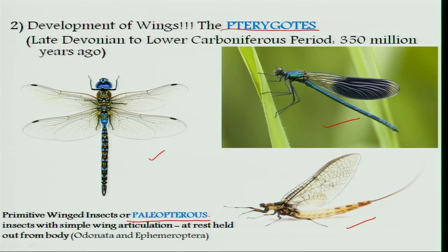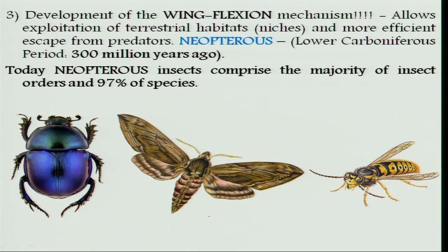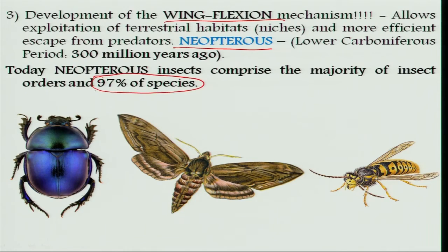The second great radiation of insects took place with a very small modification: a wing-flexing mechanism — that means they developed the ability to fold their wings. With this slight modification, insects could exploit smaller places, escape from predators, and achieve better survivorship. They are referred to as the neopterous group, and nearly 97 percent of the species existing today fall under the neopterous group.